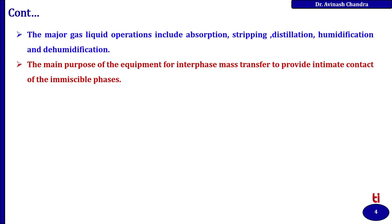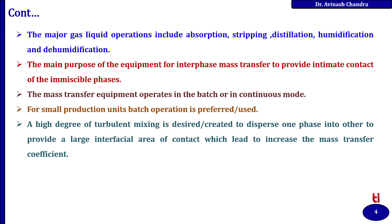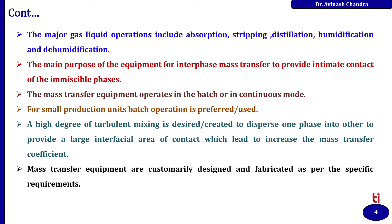The main purpose of the equipment for interphase mass transfer is to provide intimate contact of the immiscible phases. The mass transfer equipment operates in batch or continuous mode. For some small production units, batch operation is preferred. A high degree of turbulent mixing is desired to disperse one phase into the other to provide a large interfacial area of contact, which leads to an increase in the mass transfer coefficient on both sides. The mass transfer equipment are customarily designed and fabricated as per specific requirements.